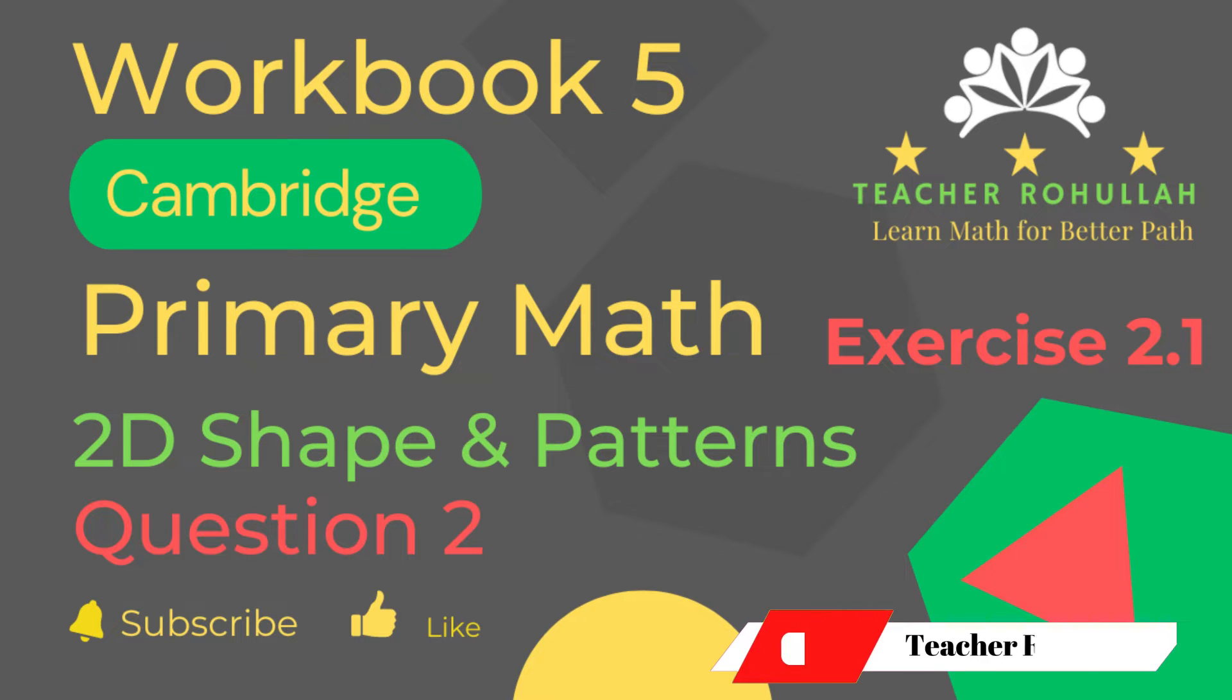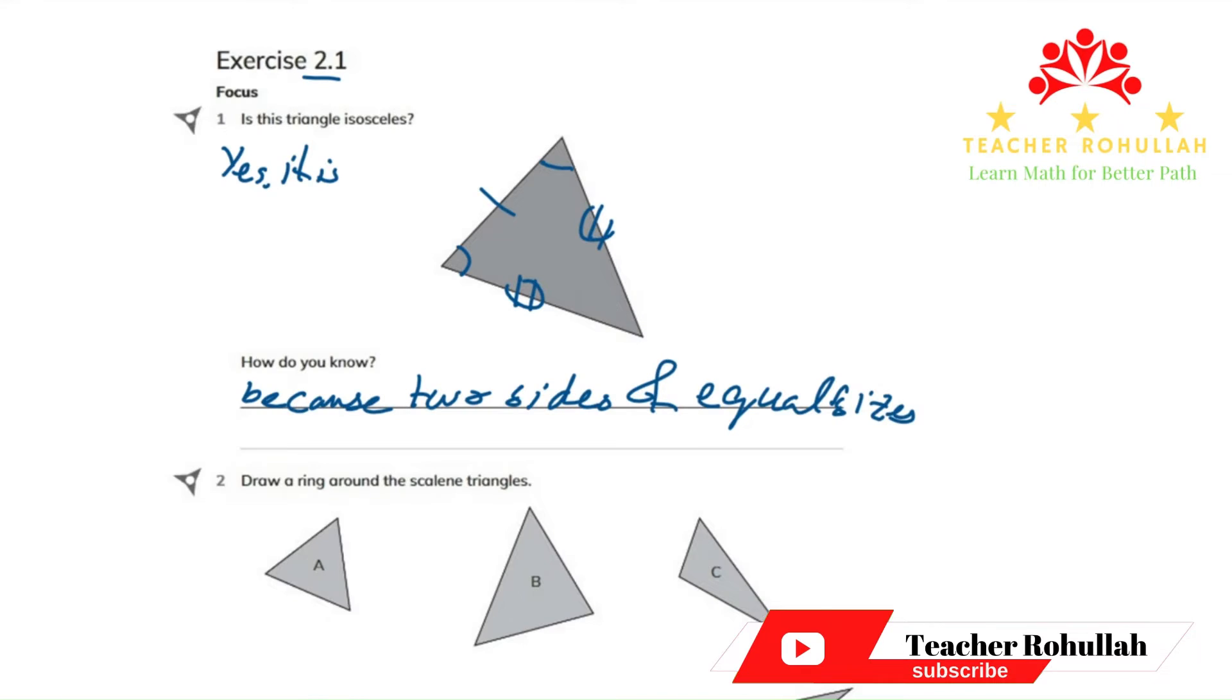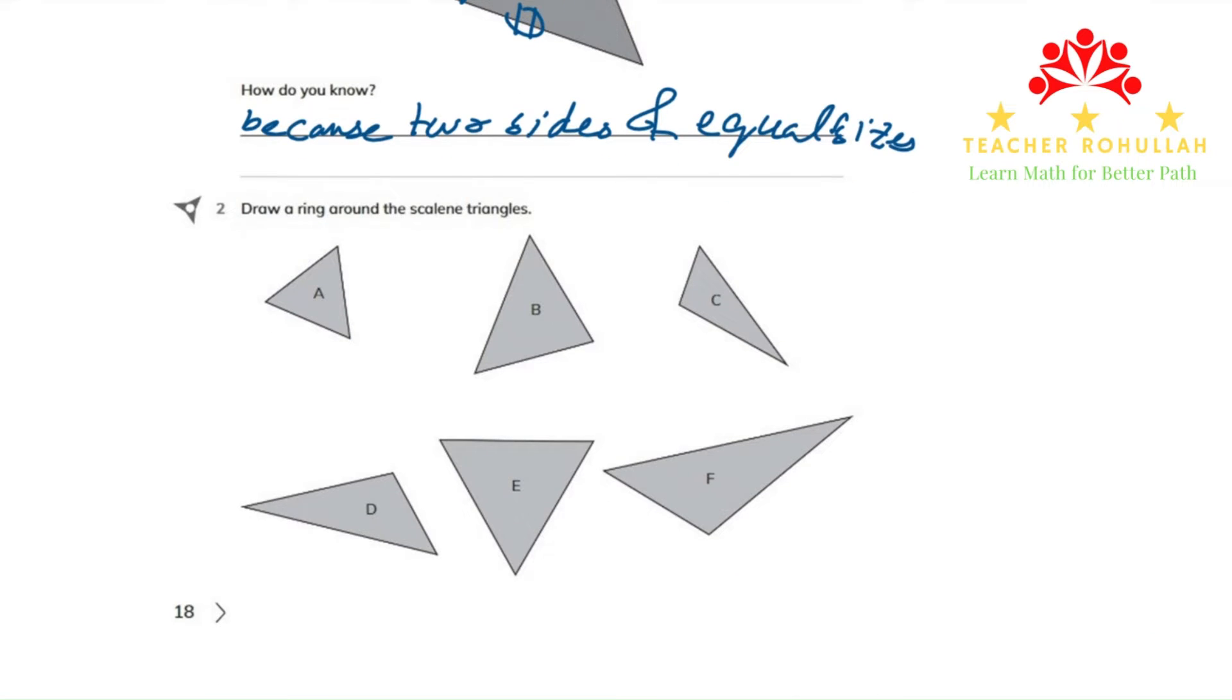Let's now move to the question and solve it. In question number two, it says draw a ring around scalene triangles.